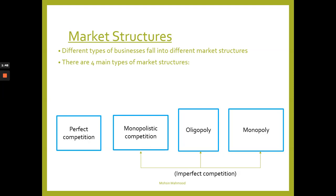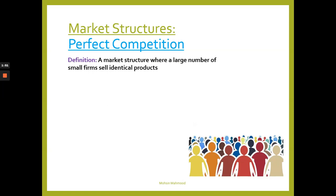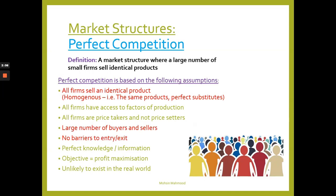The first market structure we're going to look at is perfect competition. The definition is a market structure where a large number of small firms sell identical products - products which are like-for-like, similar. Perfect competition is based on the assumption that all firms sell an identical or homogeneous product with perfect substitutes - literally the same product sold in different shops.